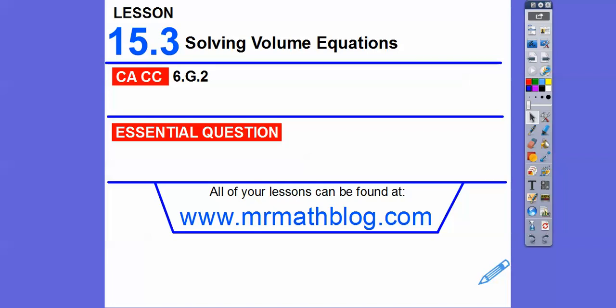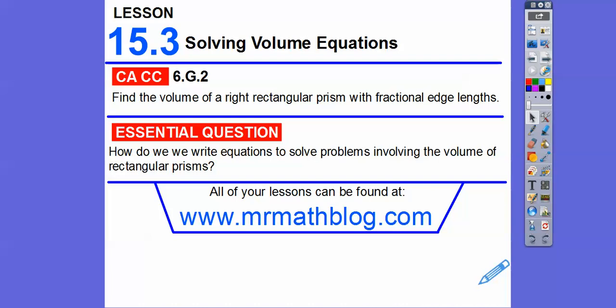Hey everybody, Mr. MapLog here. We're going to solve some volume equations. So we're going to use volume equals length times width times height with rectangular solids, and we're going to be missing a side. They're going to give us the volume or some form of it. So find the volume of a right rectangular prism with fractional edge lengths. How can we write equations to solve problems involving volume of rectangular prisms?